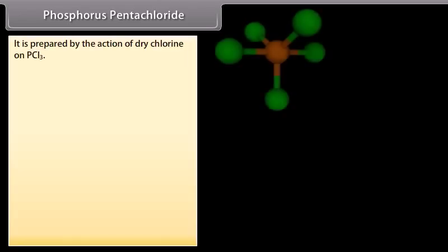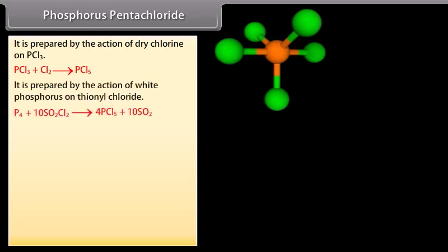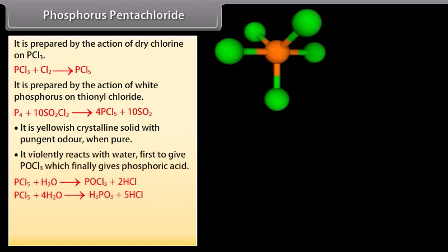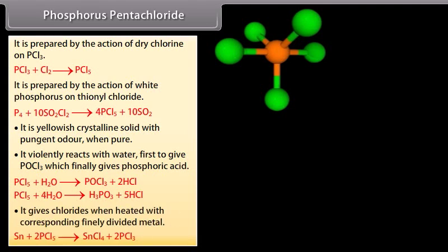Phosphorus pentachloride (PCl5) is prepared by the action of thionyl chloride. It is a yellowish crystalline solid with pungent odor when pure. It violently reacts with water, first giving POCl3 which finally gives phosphoric acid. It gives chlorides when heated with corresponding finely divided metals.